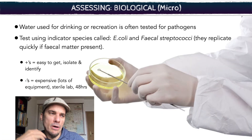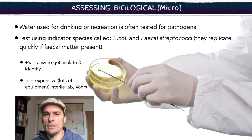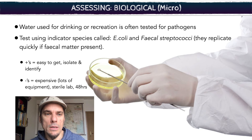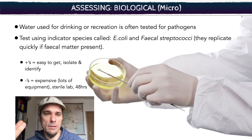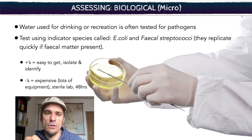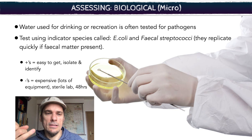When looking at biological tests, we can also talk about microorganisms — specifically E. coli and fecal streptococci. These are bacteria that are dangerous for us. Fecal streptococci is basically exactly what it sounds like: bacteria that feed on human excrement waste. The good thing about doing these tests is you can find E. coli and streptococci pretty easily and replicate them pretty easily — they're available, identifiable, and can be isolated easily in labs. The problem is they're quite expensive to run because you need a lot of agar gel and petri dishes in an extremely sterile environment. It also takes about 48 hours to get your results, so it's time consuming as well.